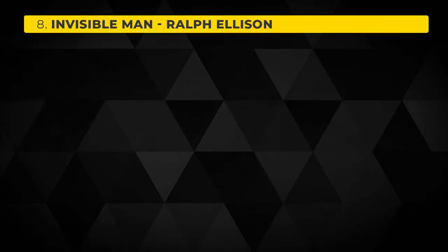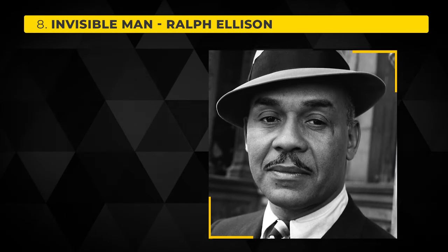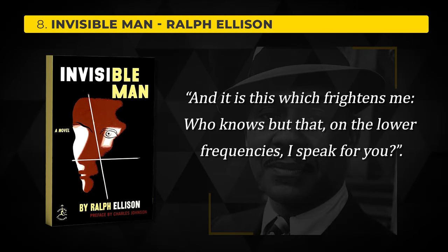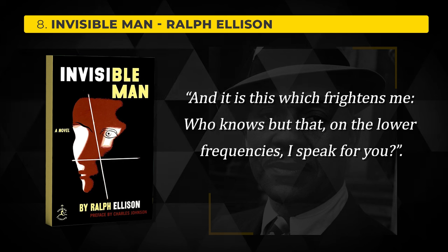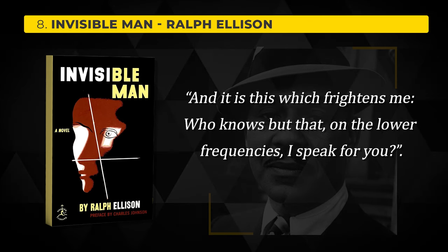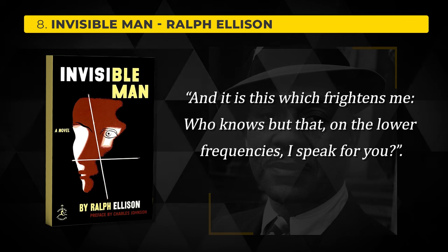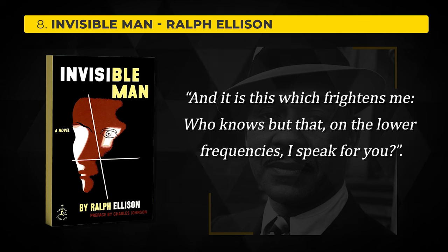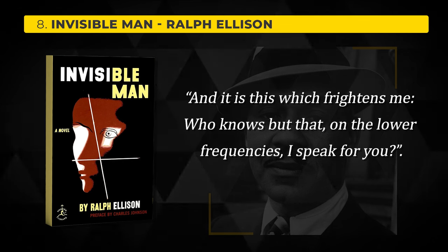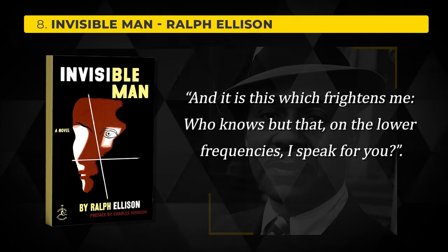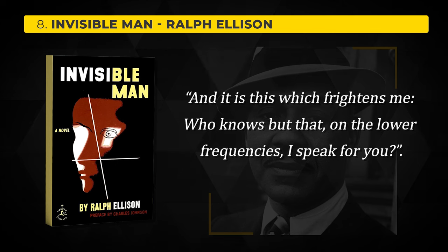The eighth closing line is from Ralph Ellison's Invisible Man: 'And it is this which frightens me. Who knows but what, on the lower frequencies, I speak for you.' This is a profound and thought-provoking novel that explores the complex issues of race and identity in America. The story follows the unnamed protagonist as he navigates a society that considers him invisible due to his race, serving as a powerful exploration of the African-American experience, social invisibility, and the search for individual identity.